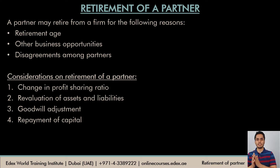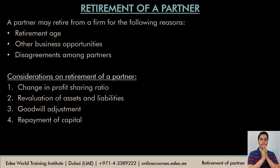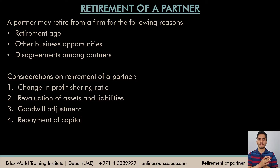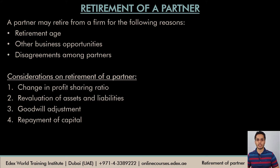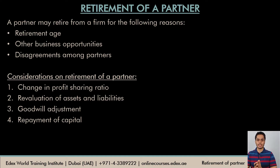What entries have to be considered at the time of retirement of a partner? First of all, there will be a change in profit sharing ratio, because in the old firm there would be a certain profit sharing ratio between all the partners, and in the new firm, when one of the partners has retired, there will be a new profit sharing ratio. Then there will be revaluation of assets and liabilities, goodwill adjustment, and repayment of capital.